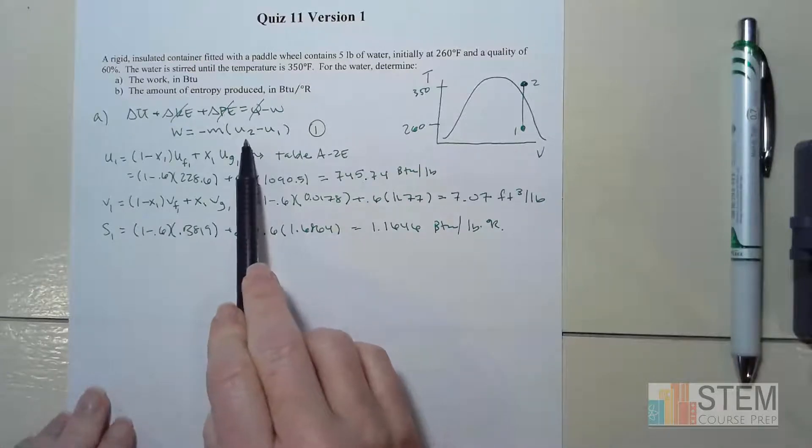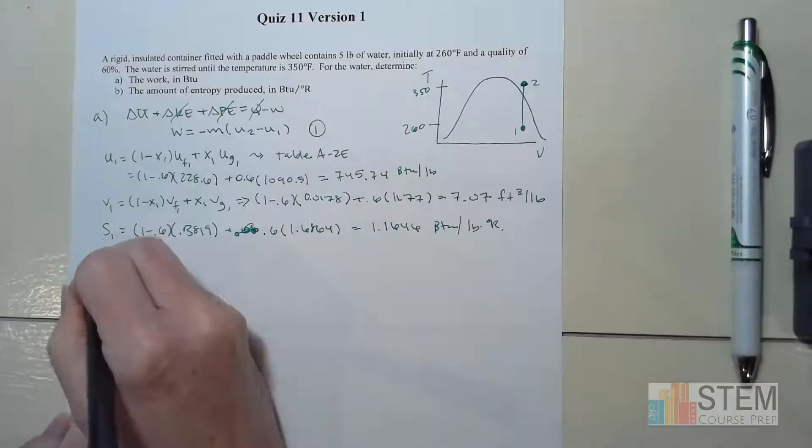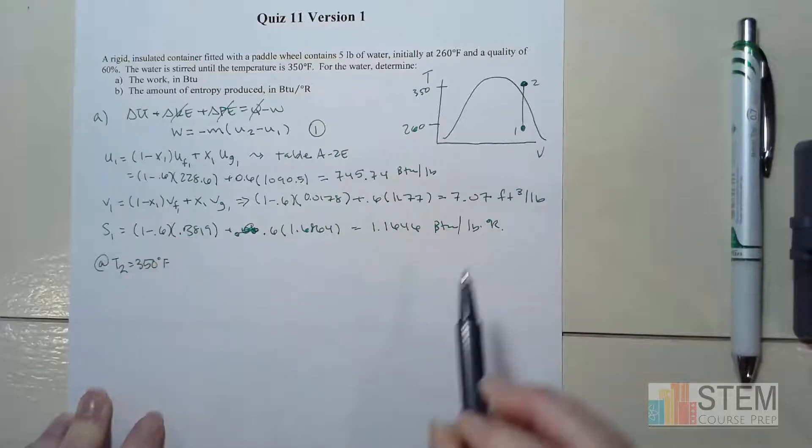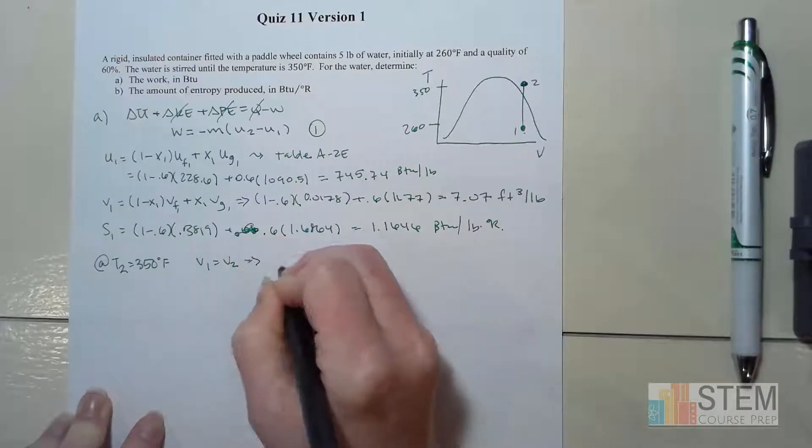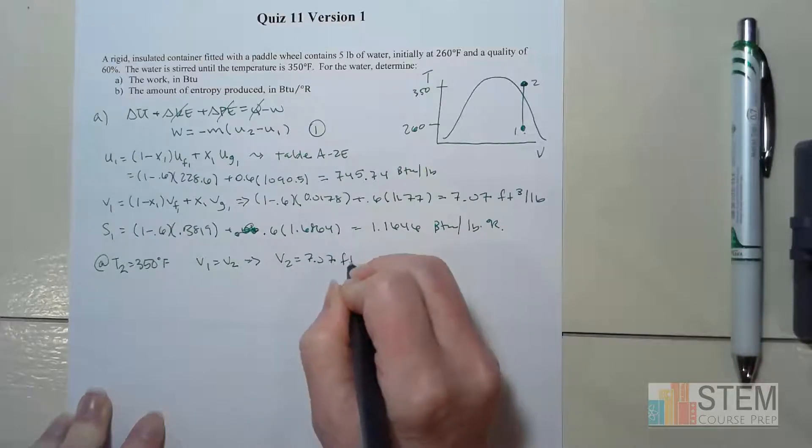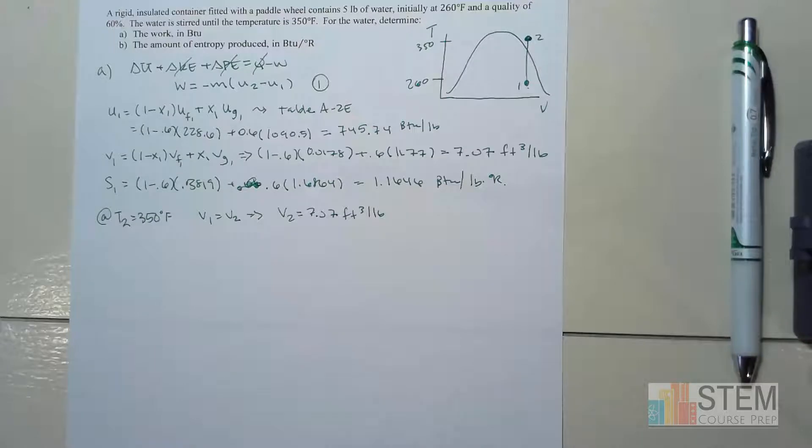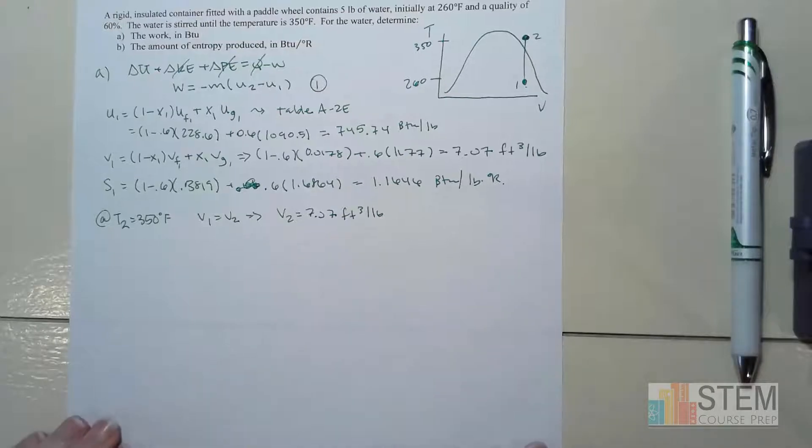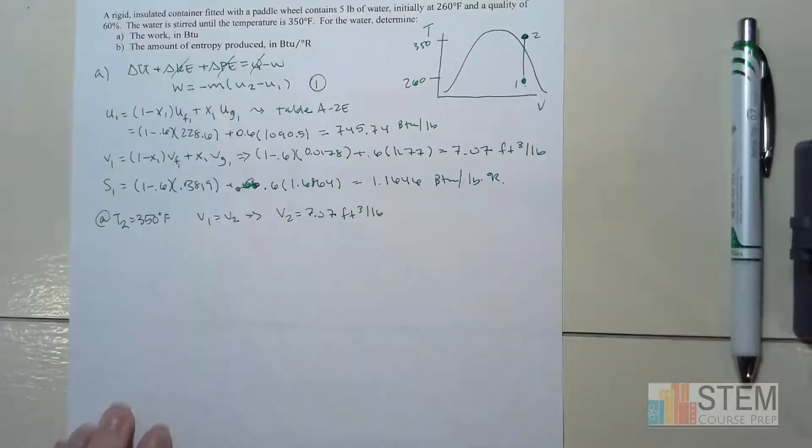So now let's find U2. At state 2, we're at a temperature of 350. We already know V1 equals V2, so V2 is 7.07 cubic feet per pound. Using those two pieces of information—the temperature and the specific volume—we'll be able to find U2, and then also S2 because I'll need that in part B.